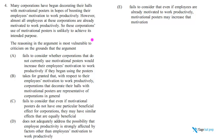We consider this a flaw method of reasoning question, otherwise known as a descriptive weakening question. I'll use those two phrases interchangeably because they mean the same thing. The question asks: the reasoning in this argument is vulnerable to criticism on the ground that the argument has done something. All the answer choices start with verbs because we're being asked to describe where the argument is weak — that's why I call it descriptive weakening, or a flaw question.